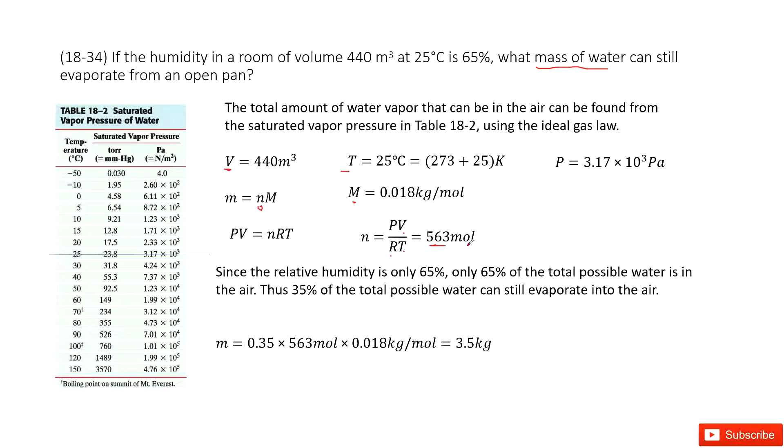But there, it tells you the relative humidity is only 65%. That means another 35% of this water is still in liquid phase, right? And this is the part that can evaporate.